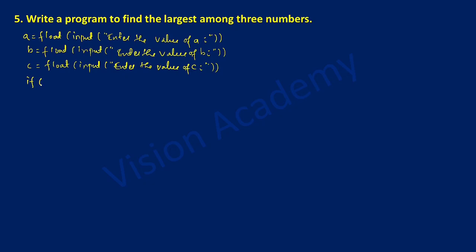Here we are going to check the condition using an if statement. I am going to check 2 conditions using the AND operator: if a is greater than or equal to b AND if a is greater than or equal to c. We need to put a colon as per the syntax of the if statement. If this condition is true, we assign the variable large equal to a.